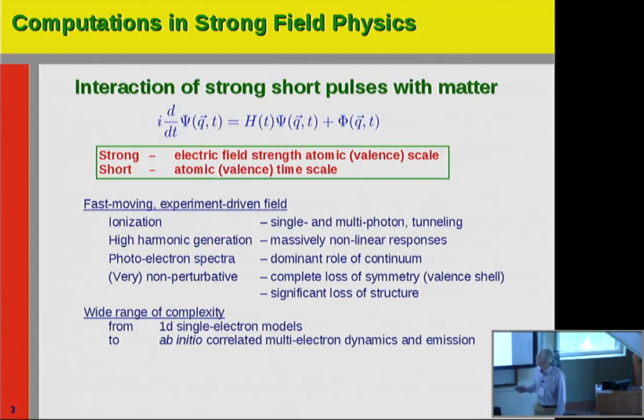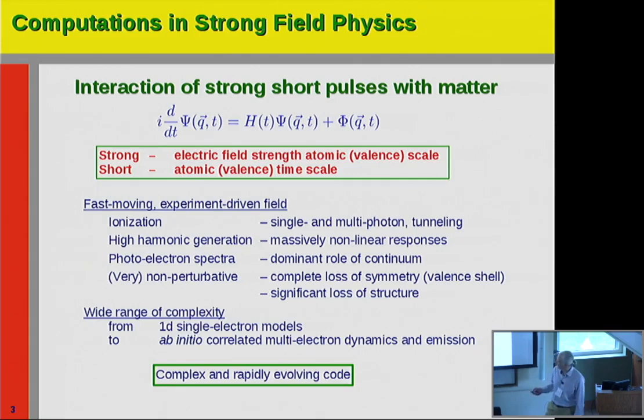When you do these things as a theorist, you encounter a wide range of complexities — starting from 1D single-electron models, which can be inspirational, all the way up to correlated multi-electron dynamics and emission. Bottom line is, if you try to cover parts of that, you will obtain a complex code that is also rapidly changing.